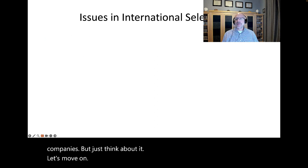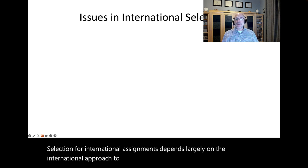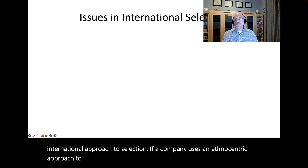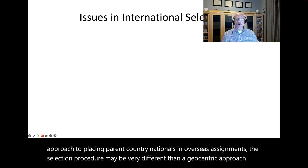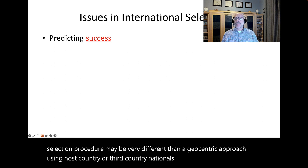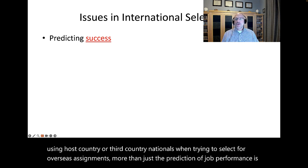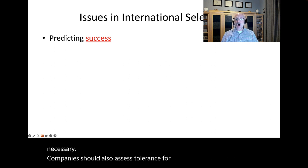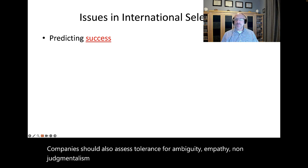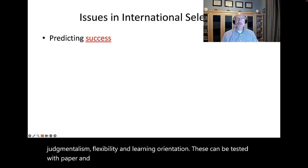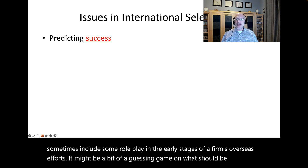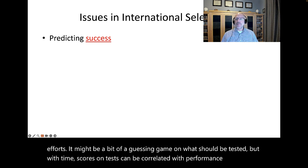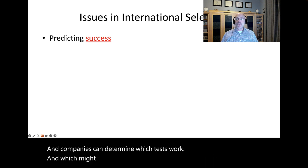Selection for international assignments depends largely on the international approach to selection. If a company uses an ethnocentric approach to placing parent country nationals in overseas assignments, the selection procedure may be very different than a geocentric approach using host country or third country nationals. When trying to select for overseas assignments, more than just the prediction of job performance is necessary. Companies should also assess tolerance for ambiguity, empathy, non-judgmentalism, flexibility, and learning orientation. These can be tested with paper and pencil tests, bio-data, and interviews. In the early stages of a firm's overseas efforts, it might be a bit of a guessing game on what should be tested. But with time, scores on tests can be correlated with performance scores.